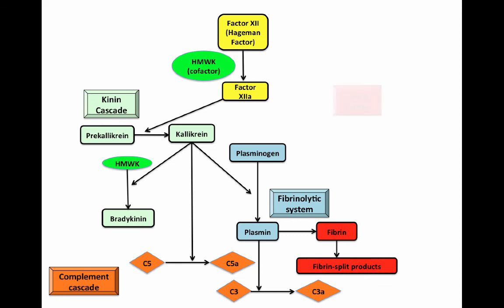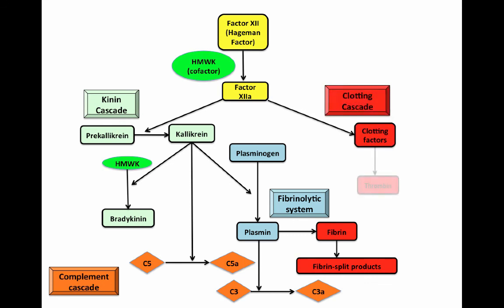Factor XIIa is also involved in the production of thrombin from clotting factors. Thrombin can directly activate platelets via proteolytic cleavage of protease-activated receptors and induce conversion of fibrinogen to fibrin. Fibrinogen, produced in the liver, promotes endothelial repair and causes platelet aggregation. Fibrin forms a framework that entraps platelets, and together they lead to the formation of a blood clot.